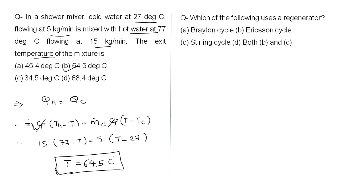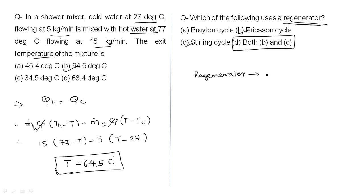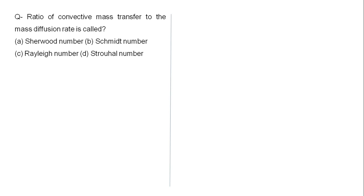Which of the following uses a regenerator? Both the Ericsson and Stirling cycles use a regenerator. Answer is D. A regenerator recovers exit/waste heat from the system and utilizes it for heating purposes inside the system.